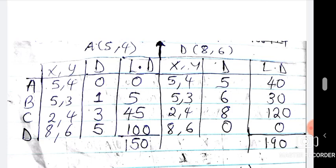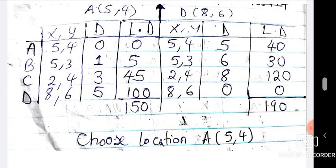One side gave a total load distance of 150 and the other gave 190. Since we want the least, we choose to position the plant at location A. That's how you deal with load distance — understand how to get the distance first using the absolute formula, then multiply by population to get load distance, and pick the minimum. Re-watch this video as needed to grasp the concept.